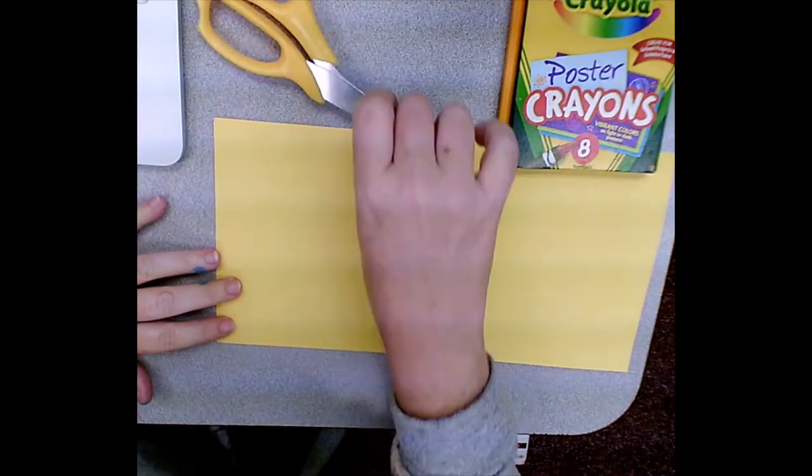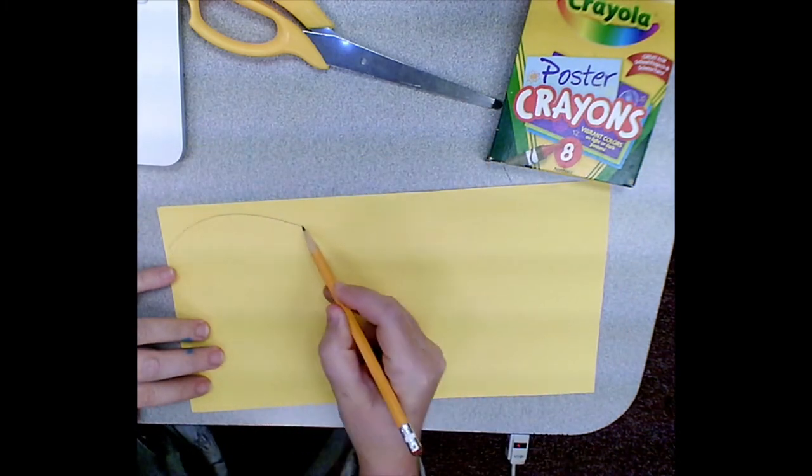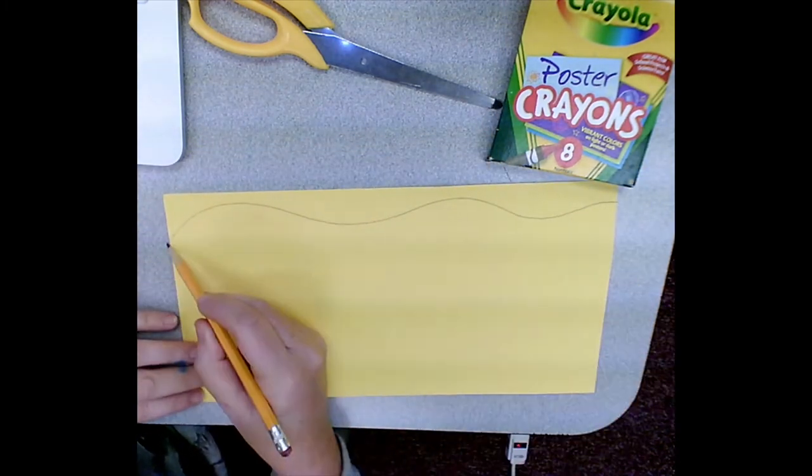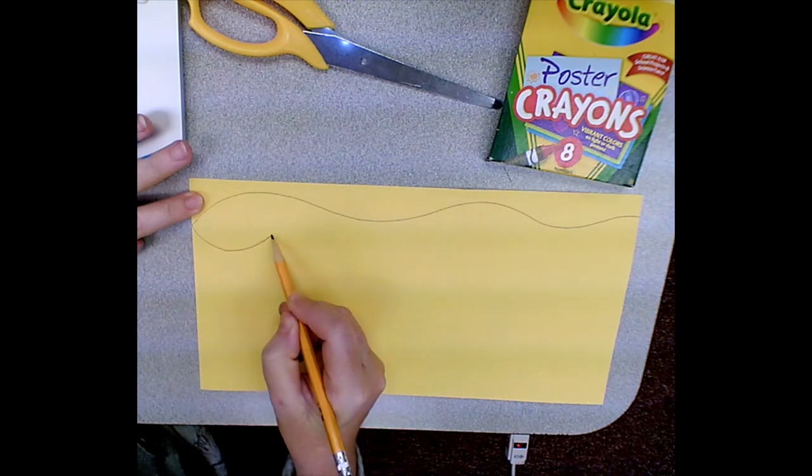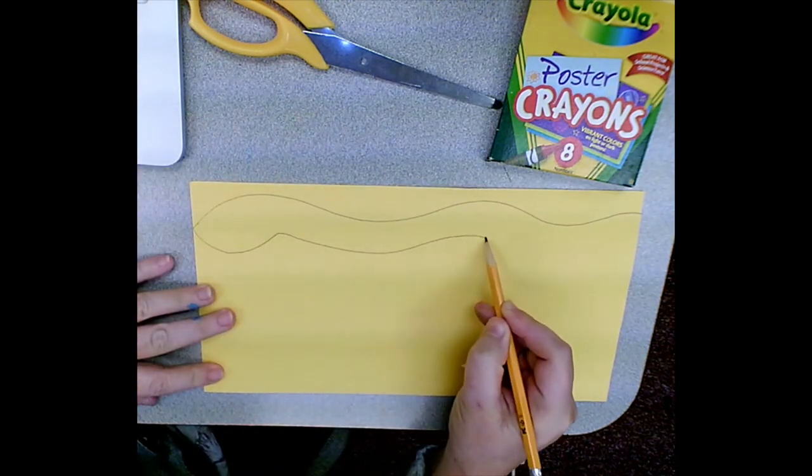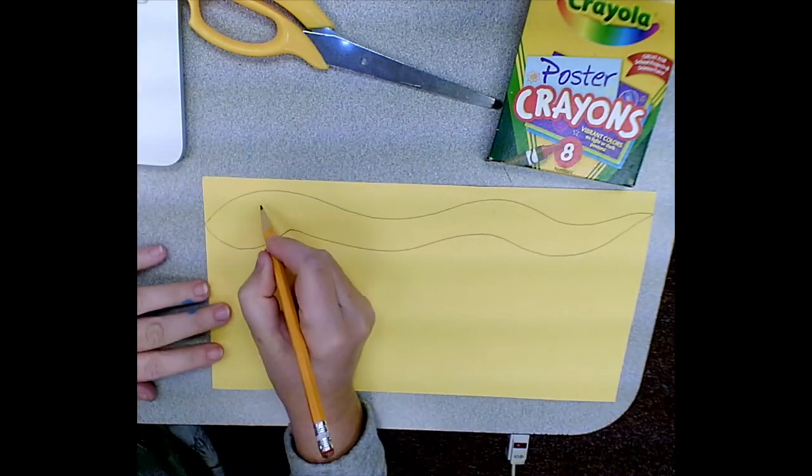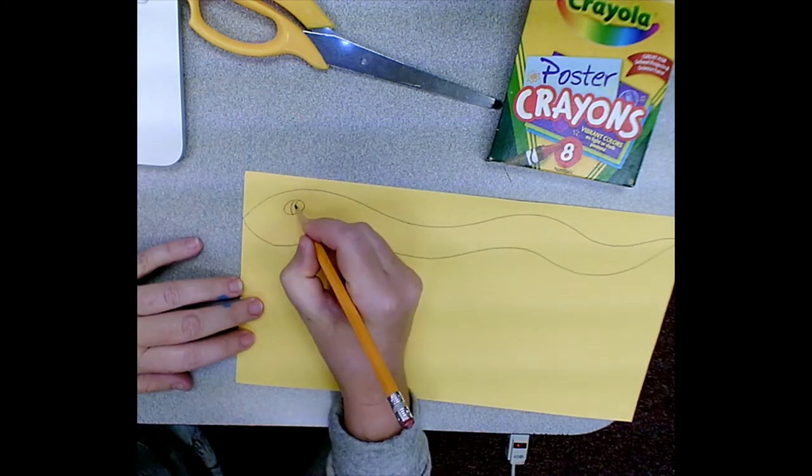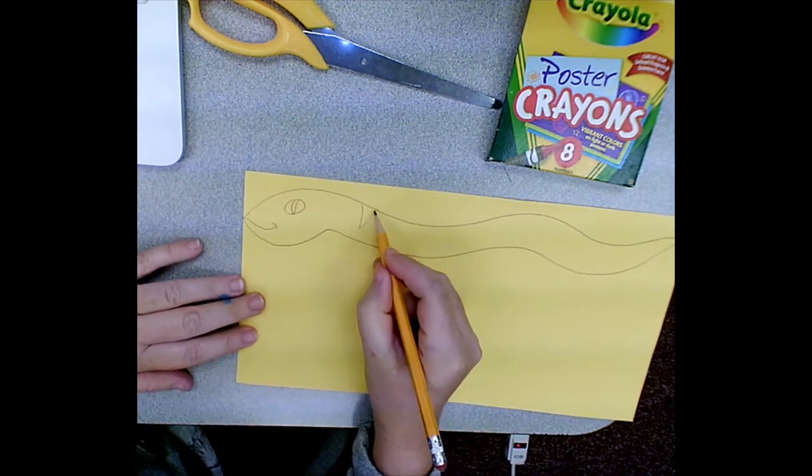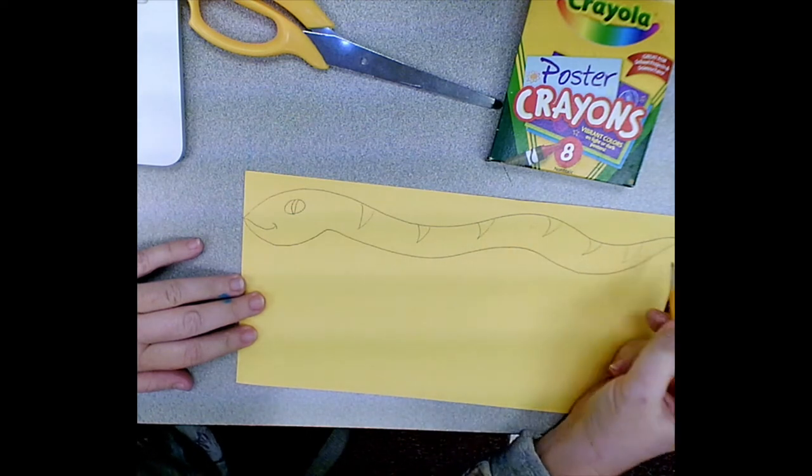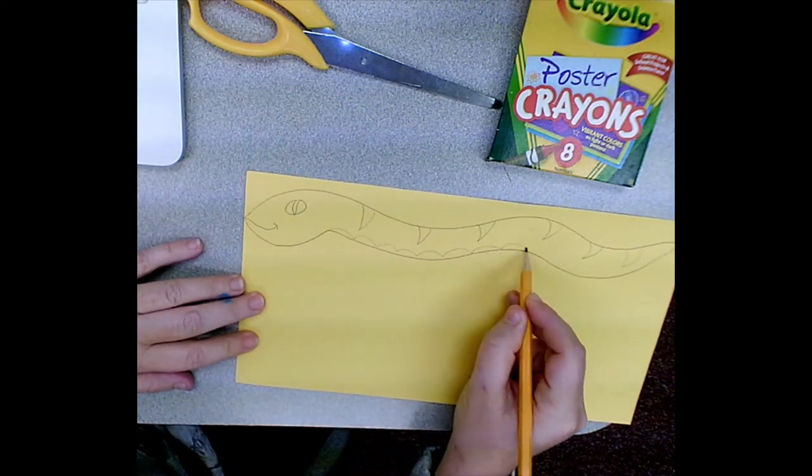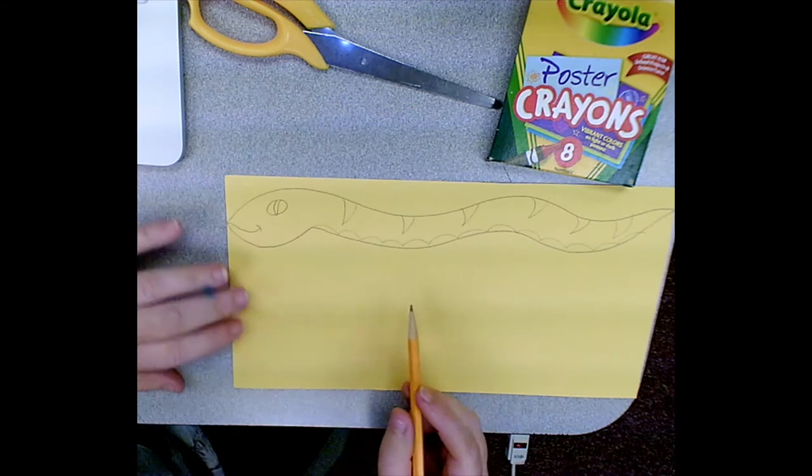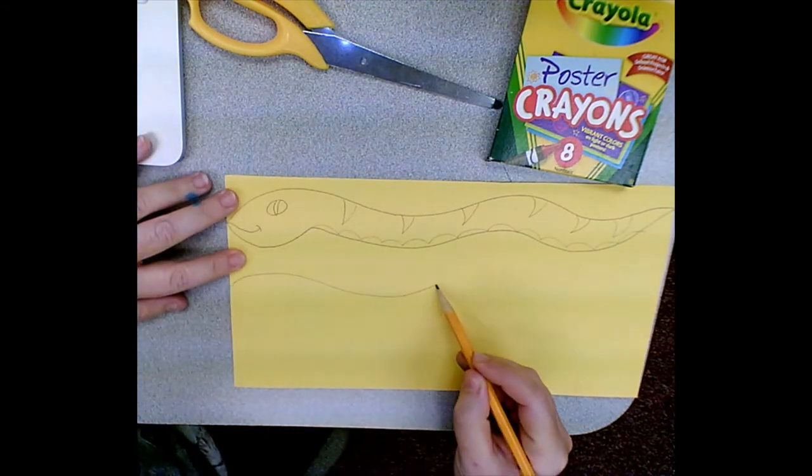Now it's time to create the snakes. I'm going to use a wavy line all the way across the page, and then the other side of my snake is just a parallel wavy line. I can make a little lump for the head. There's eyes, a mouth, decorations, scales - anything you'd like to add.